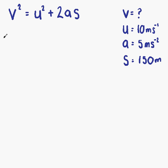So V is what we're trying to calculate. V squared equals U squared. U is 10, so that's 10 squared. Then we have plus 2AS.